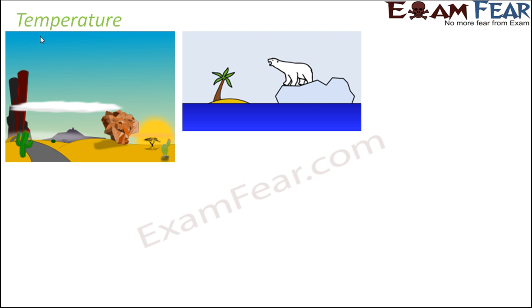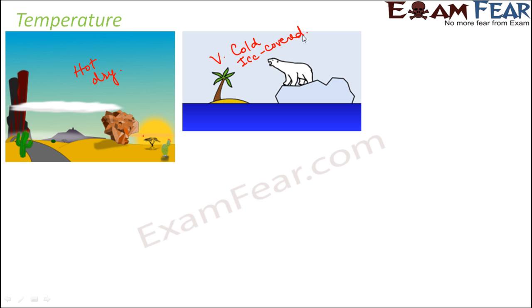So we will start with temperature. If you compare a desert with a polar region, how is the temperature different in these two habitats? When you look at a desert, the climate here is hot, dry, less rainfall. Whereas in polar regions, it is very cold, covered with ice — snow covered regions. This difference is due to different temperatures in these two habitats.